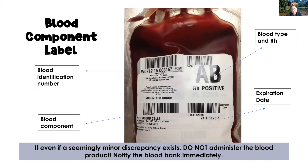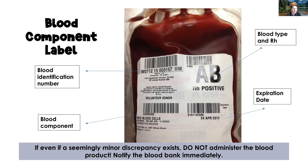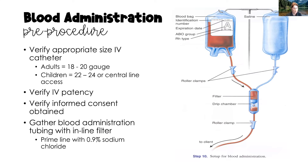On the blood bank label, look for: the blood identification number (should match the transfusion record and the client's armband), the blood type of the component, the component type (e.g., packed red blood cells), and the expiration date. Even a seemingly minor discrepancy — a misspelled name or one number off in the blood ID — means you should not administer the product. Notify the blood bank and return the component.